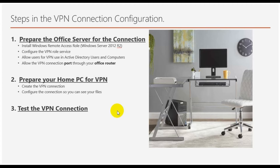After the server role is installed, the VPN service will need to be configured. Users will also need to be allowed — in this case I will provide an example of one user in Active Directory Users and Computers and give that user access to use VPN, and also allow the VPN connection port through your office router, because if you don't do this you may have issues connecting to VPN.